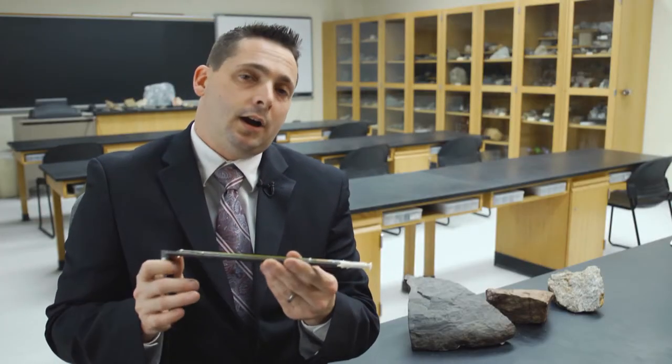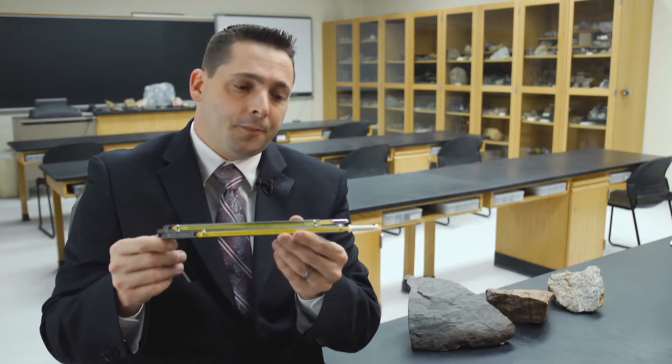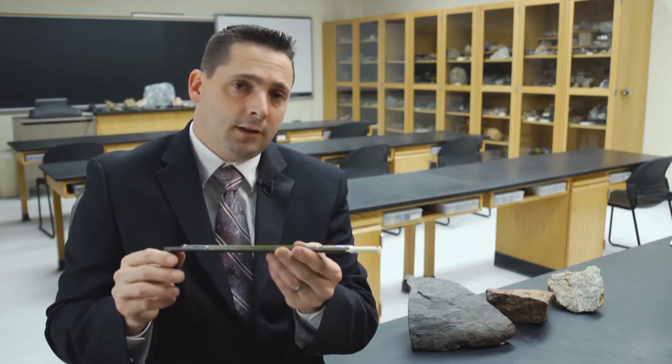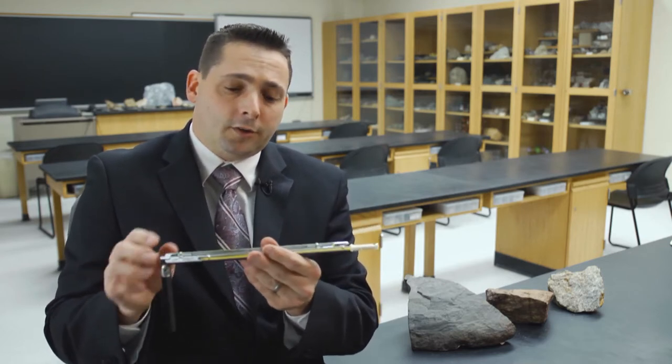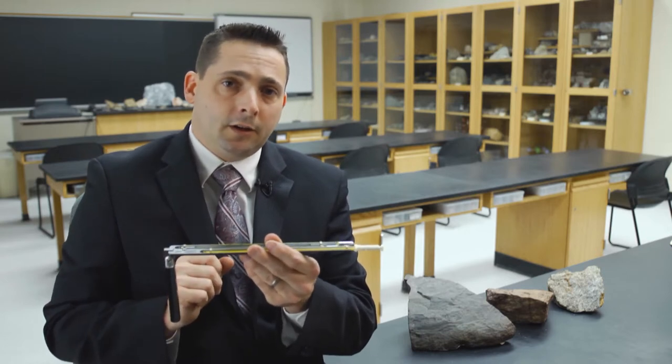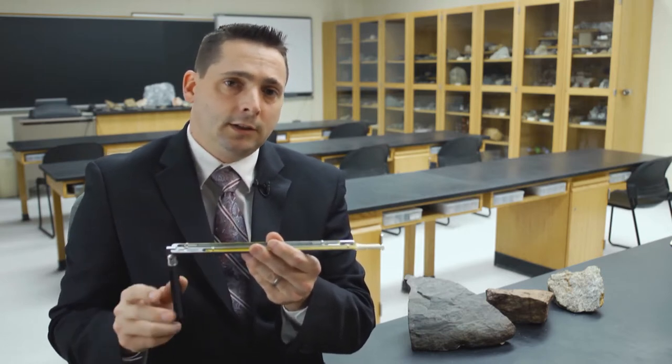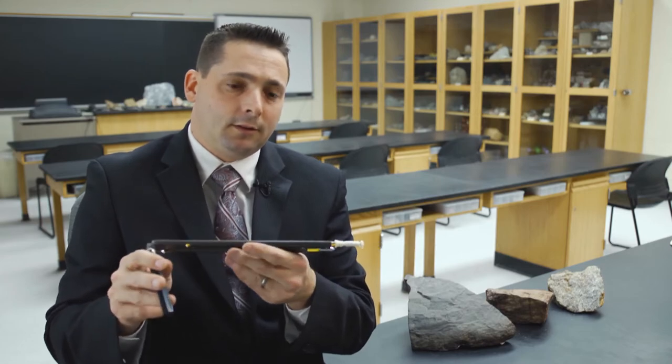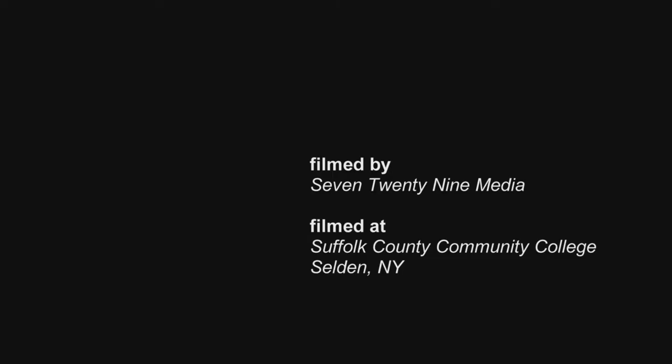So one really simple project involving a sling psychrometer is to measure the relative humidity versus the temperature on a daily basis. And we can produce a plot showing how relative humidity changes with respect to temperature.